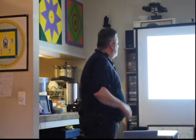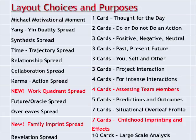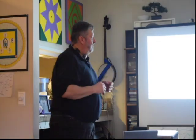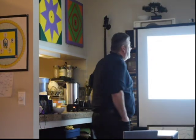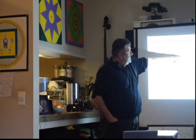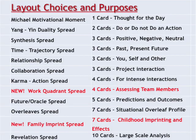The first one here: micro-motivational moment, one card. The yin-yang — the duality spread — is for yes or no, should I do it or not do it kinds of questions. The synthesis spread has a positive, negative, and neutral. If I do something, the positive is what will be useful, the negative is the downside, and the neutral gives you a piece of feedback on where to decide from. Notice we have four different three-card spreads.